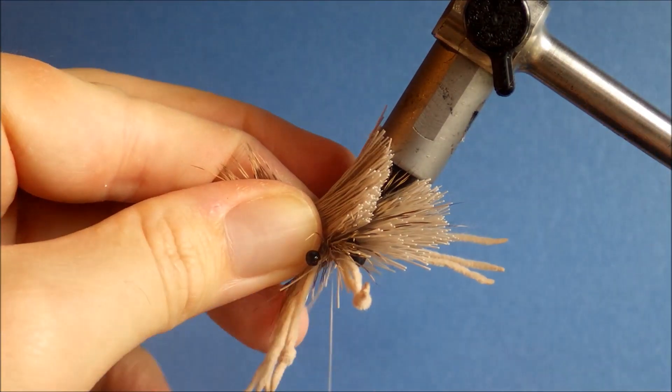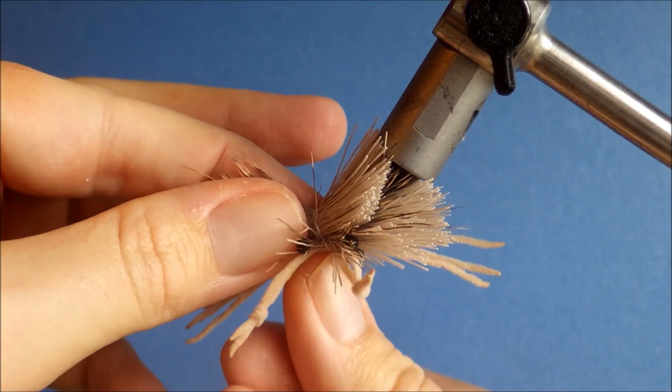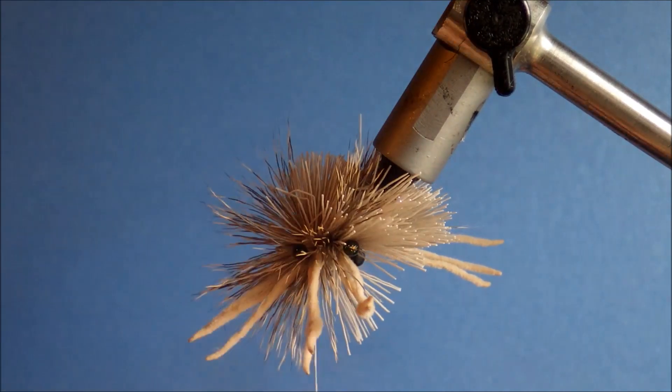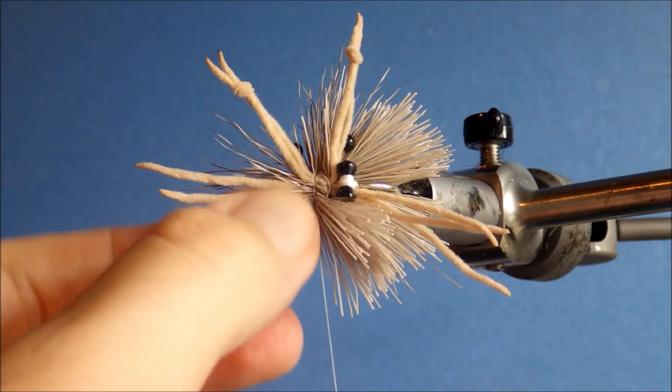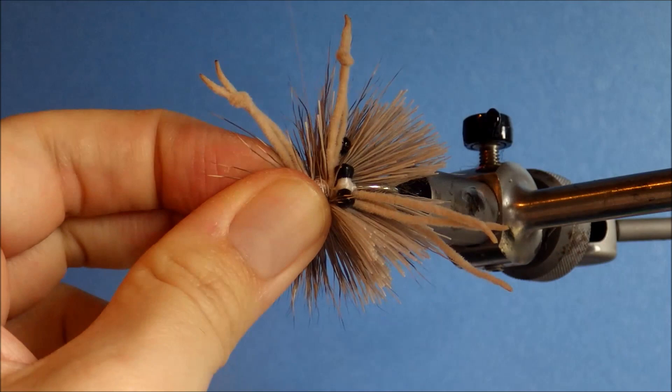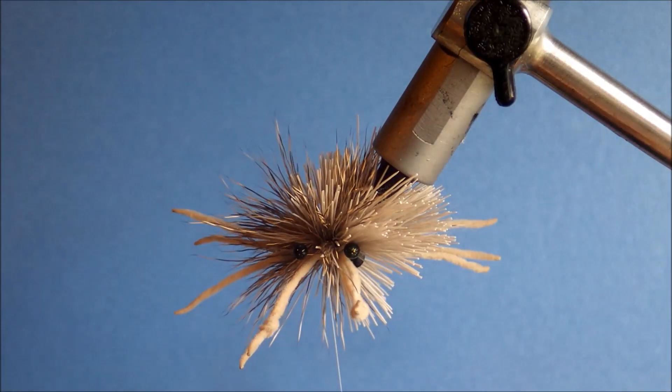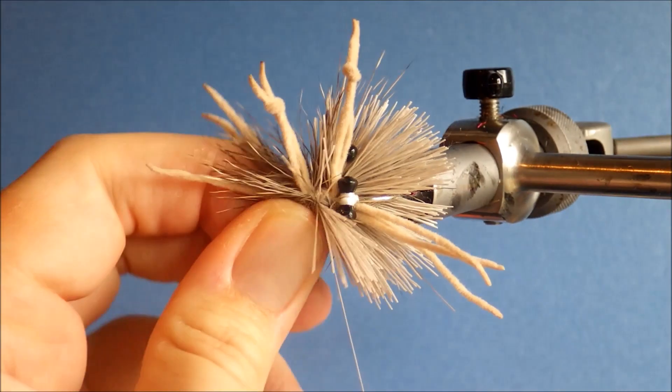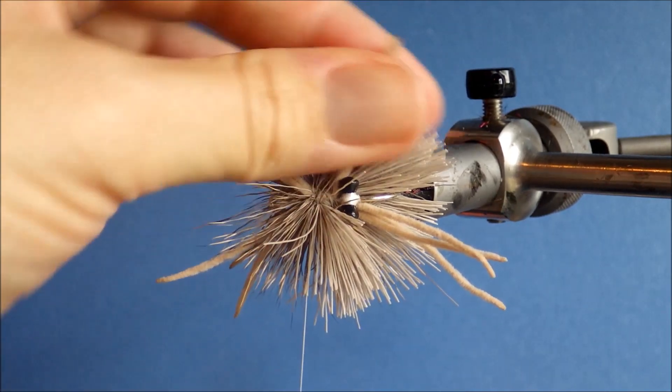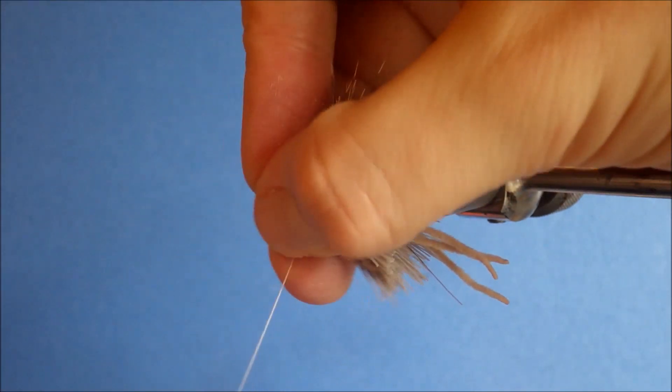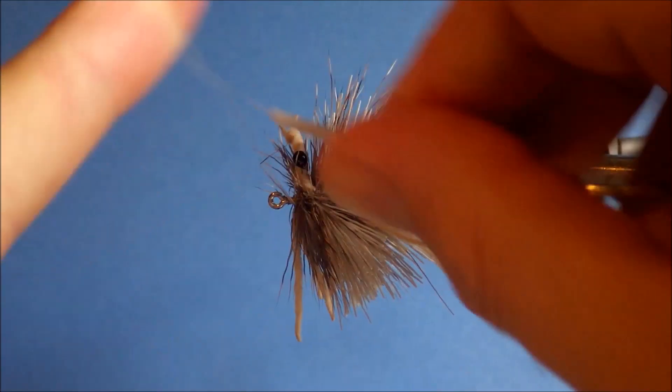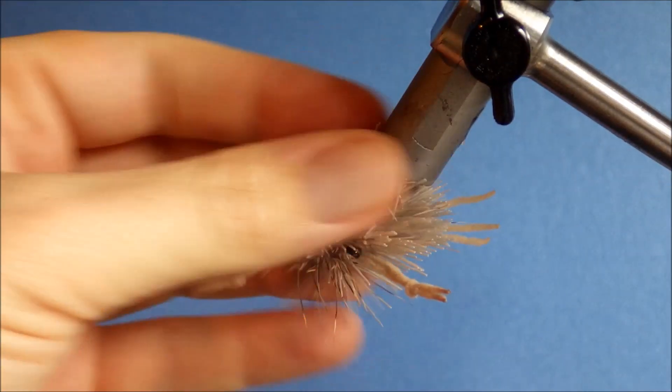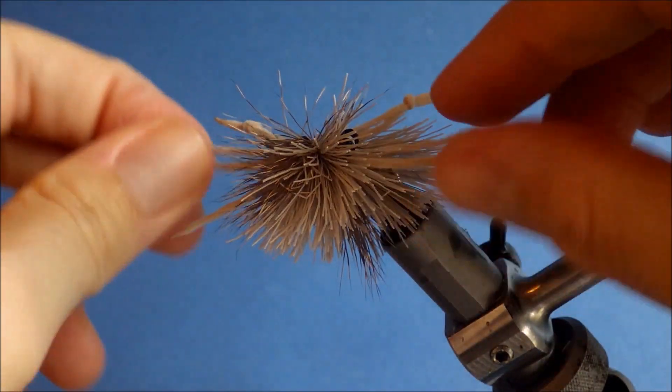Same again. Couple of loose wraps. Pull it tight. You can see that the legs have went all over the place, but don't worry. Don't worry about that if you find that happening. And just run the thread through the hair a couple of times just to hold everything in place. Make sure it's not going to come out on you. And then bring your thread to the front and throw in a whip finish.